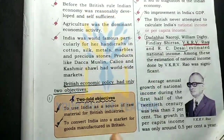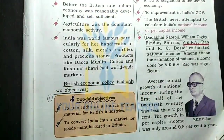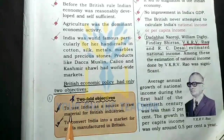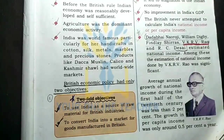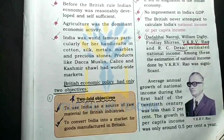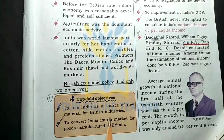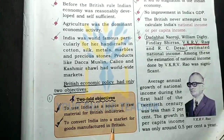The British economic policy had only two objectives. One is to use India as a source of raw materials for British industries — the British would buy raw materials from India. Two is to convert India into a market for goods manufactured in Britain.